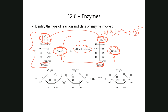Here's another example: maltose acted on by maltase. When an enzyme name partially includes the name of a substrate and ends in '-ase,' that typically signals it's a hydrolase — it breaks things down by the action of water. What you see is a disaccharide whose acetal (glycosidic bond) is cleaved by the incorporation of water, yielding two glucose molecules. This is a hydrolase — specifically a glycosidase, because it hydrolyzes a glycosidic bond, and more specifically maltase because it hydrolyzes maltose.